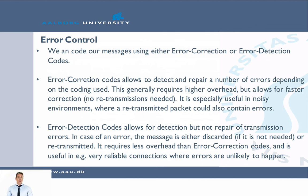The advantage of error correction is that we can do corrections without retransmission, by only working on the receiving side. This is especially useful in noisy environments, because if we have to retransmit many frames, those retransmissions could also contain errors. On the other hand, error detection codes have less overhead. They allow us to detect errors but not repair them, so if we receive a damaged frame, we must discard it or request a retransmission. Error detection is more useful in stable, reliable networks where errors are unlikely and the lower overhead is beneficial.